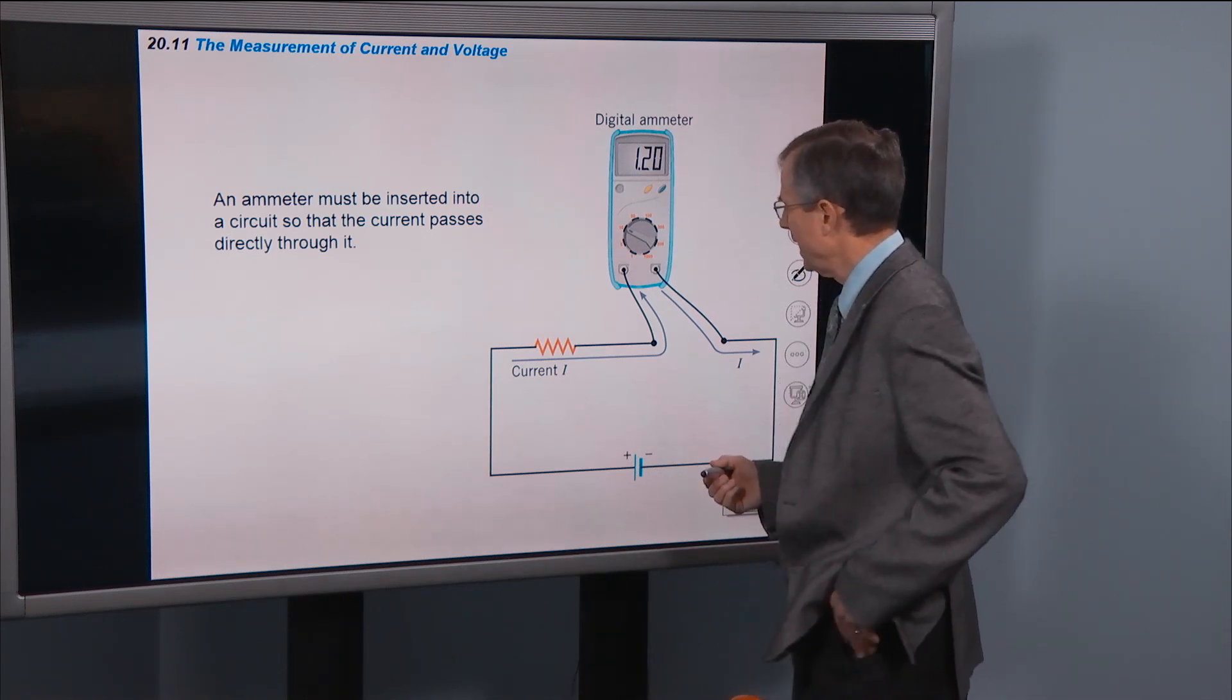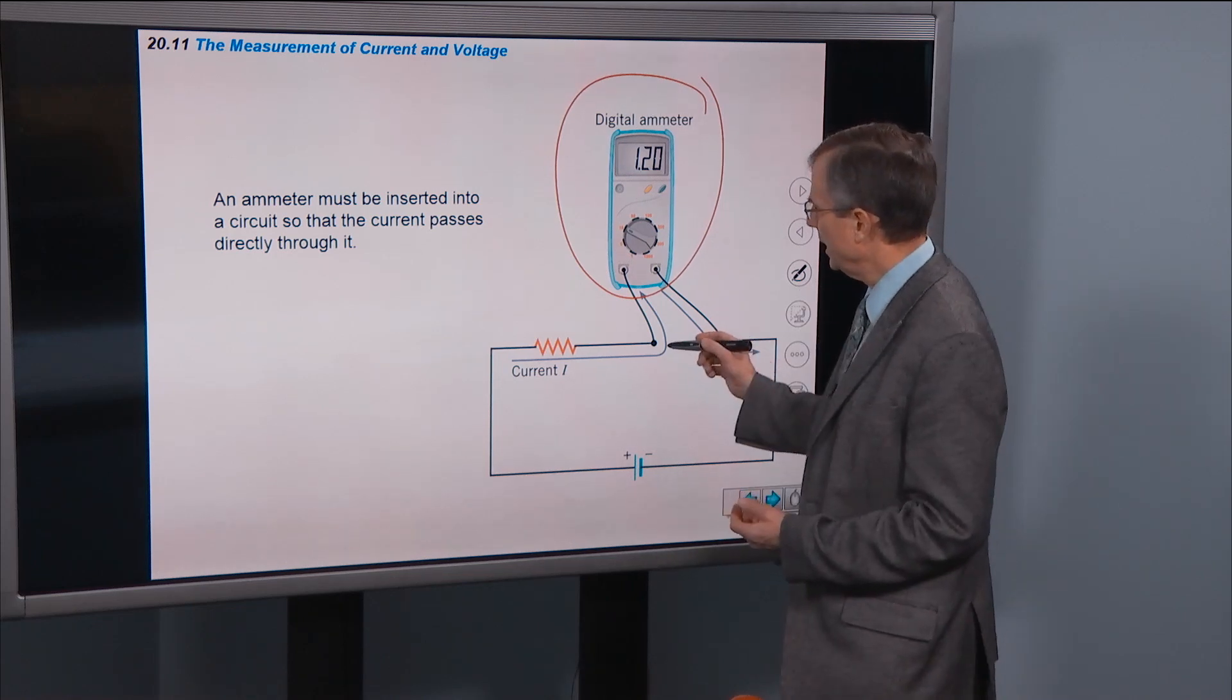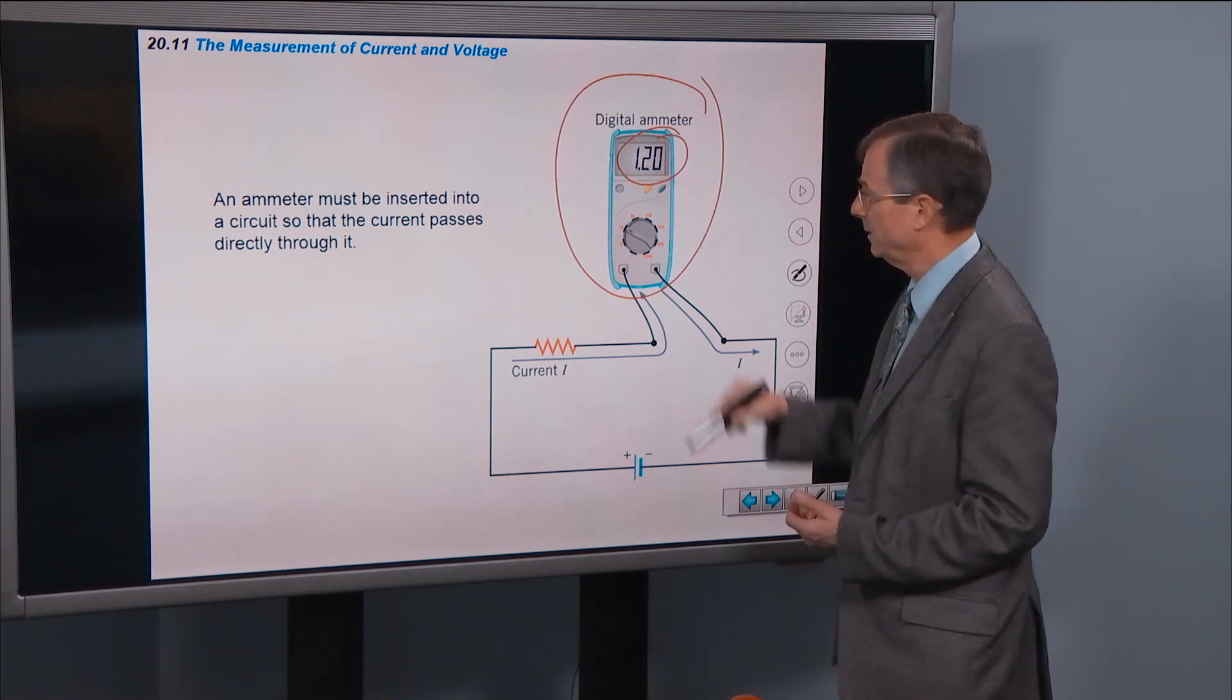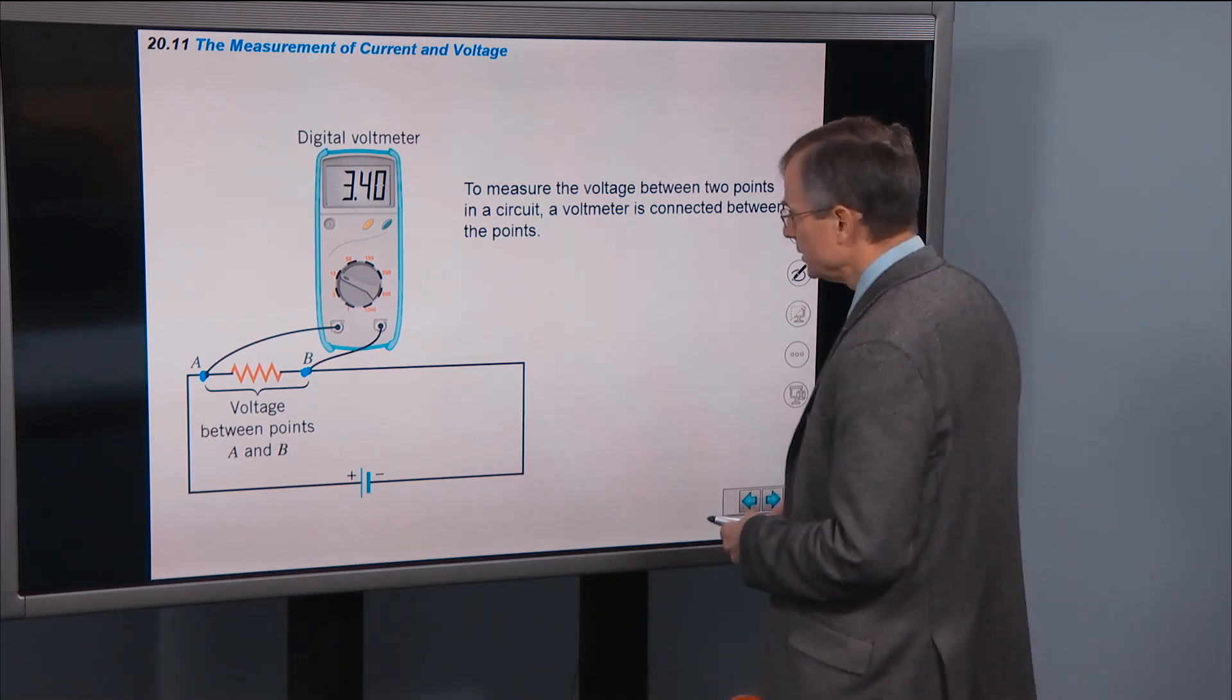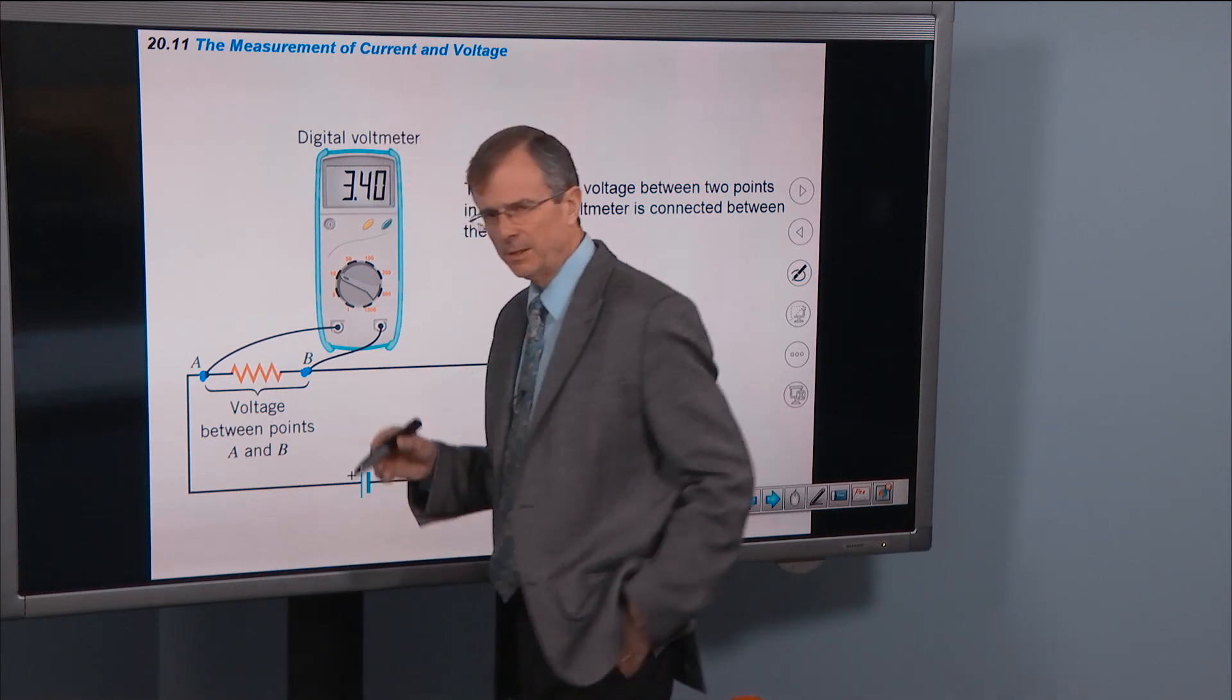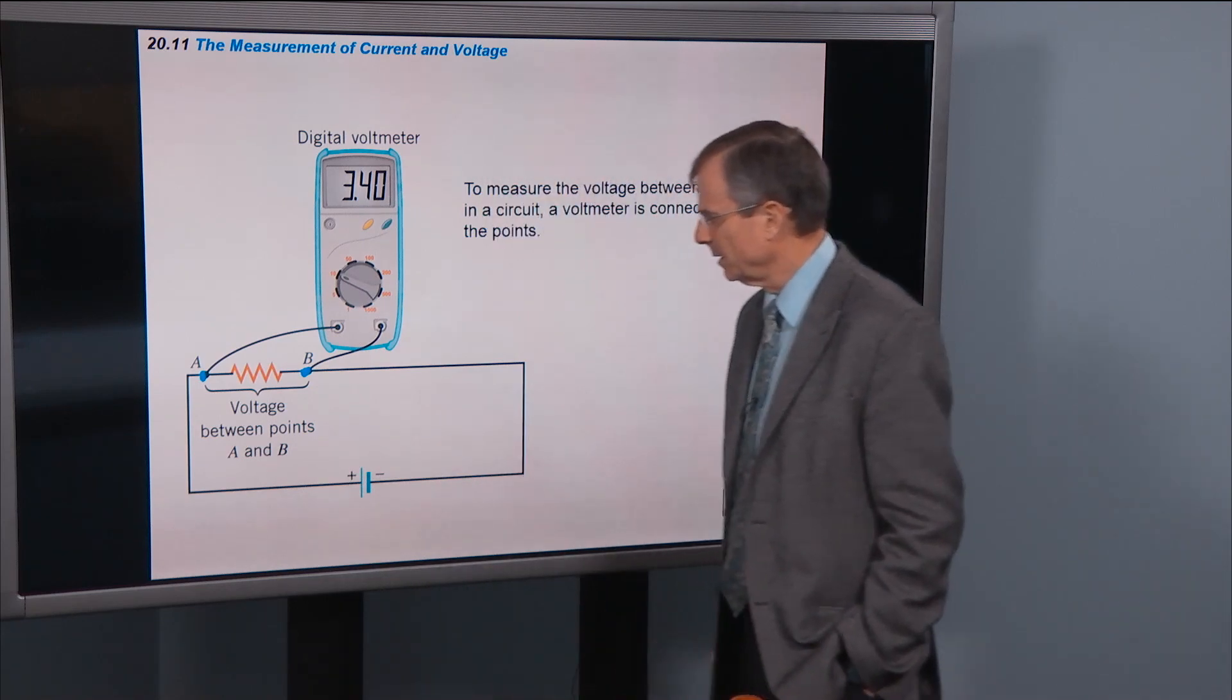In the lab you will use an ammeter to measure currents in a circuit. And this is just a device. This is a handheld ammeter. Some of you have them. And in order to measure the current in the circuit, then the current in the circuit has to pass through that ammeter. And then you measure out a current in amps. And to measure a voltage between two points in a circuit, you connect a voltmeter between those two points. And you'll be doing that also in lab. And it won't be handheld. There's a machine that's involved in the lab that does this for you. But you can measure the voltage between point A and point B using a voltmeter.